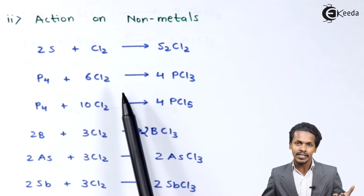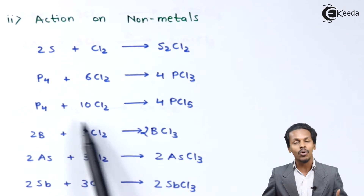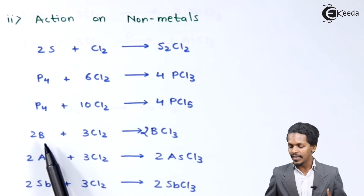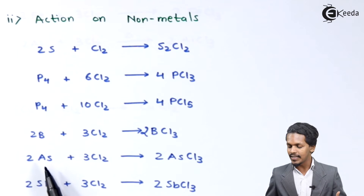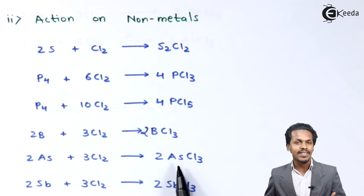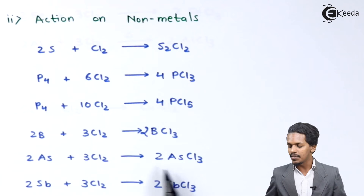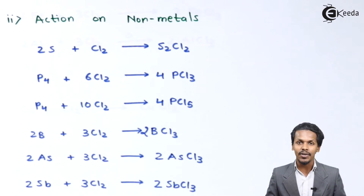When phosphorus is reacted with 10 moles of Cl₂ — that is, an excess amount — it forms 4 moles of PCl₅, phosphorus pentachloride. When boron is treated with Cl₂, it forms 2 moles of BCl₃. When arsenic is treated with 3 moles of Cl₂, it forms arsenic trichloride, AsCl₃. And when antimony is reacted with 3 moles of Cl₂, it forms 2 moles of antimony chloride, SbCl₃.